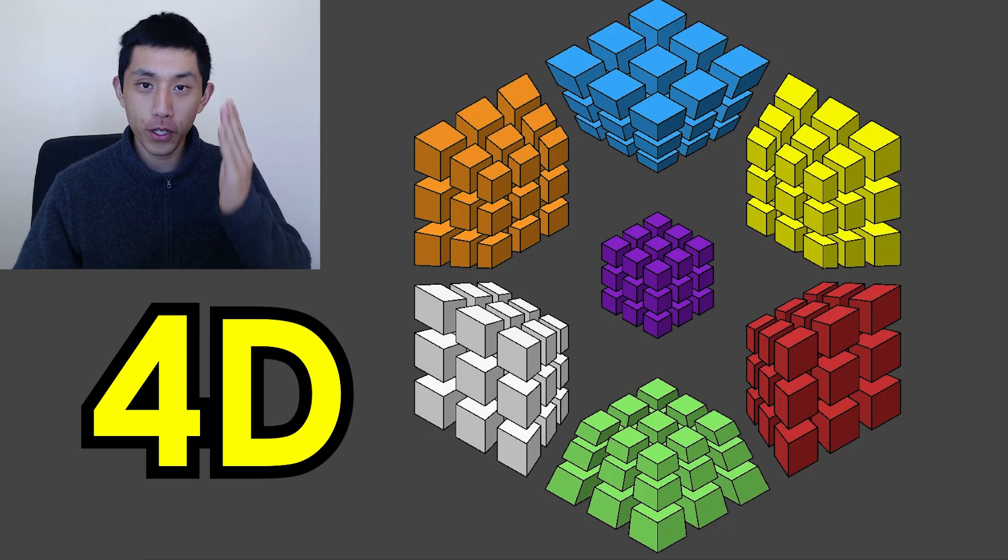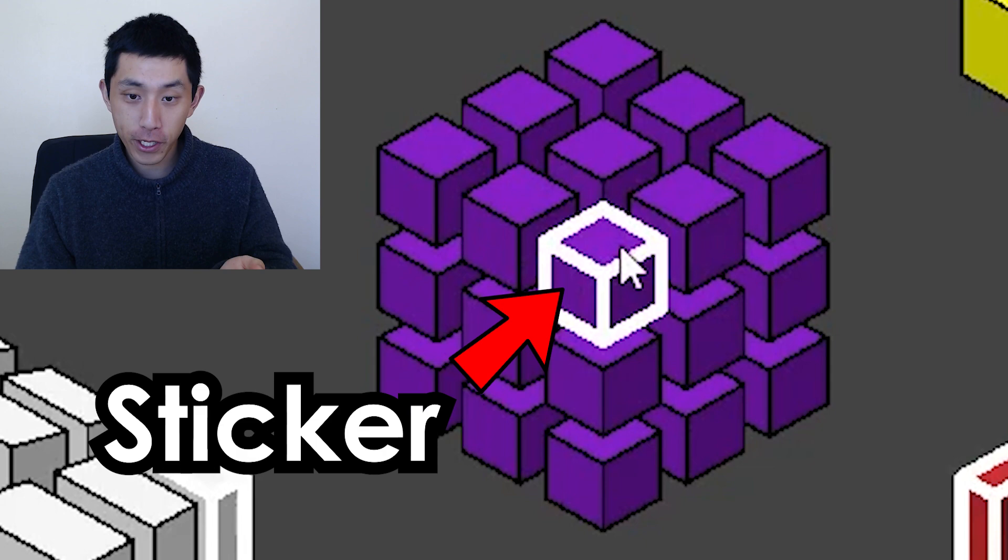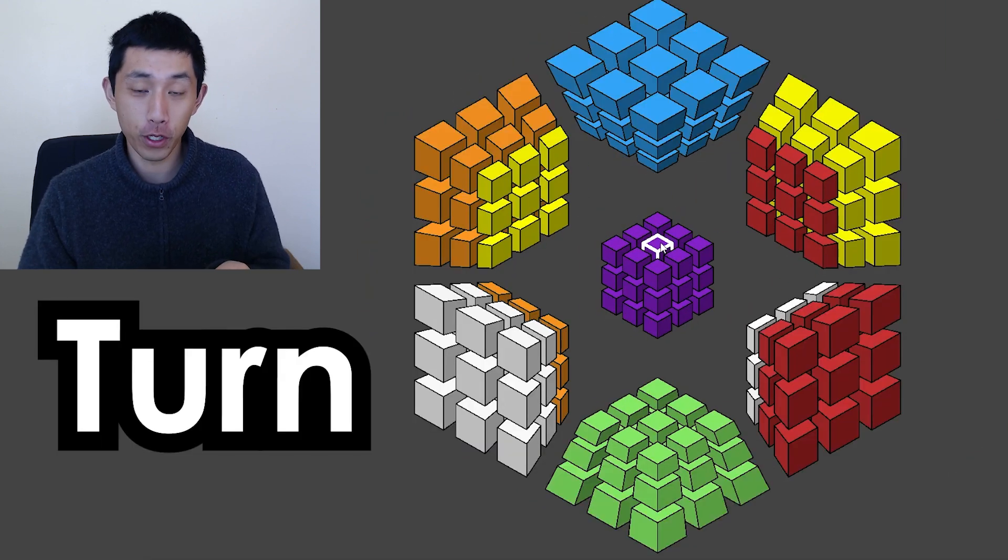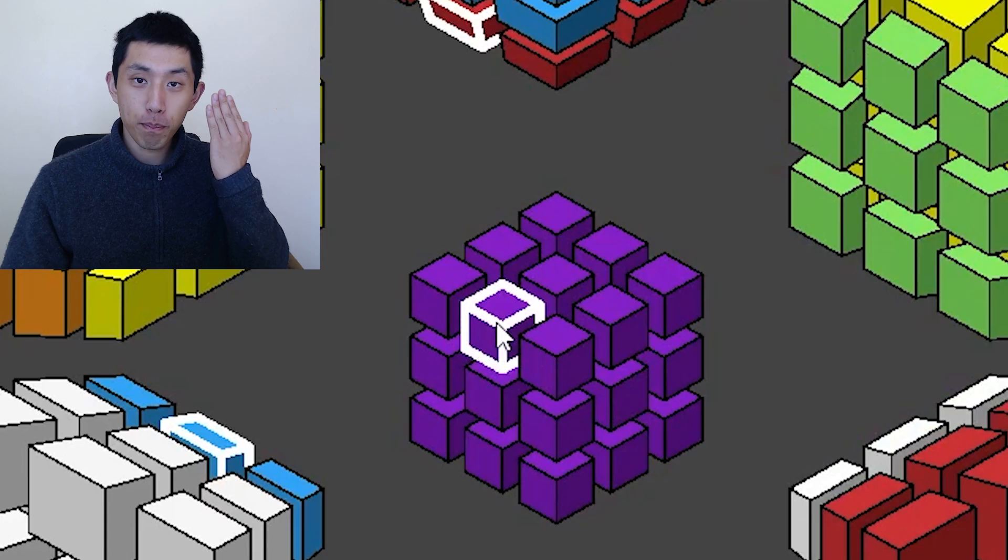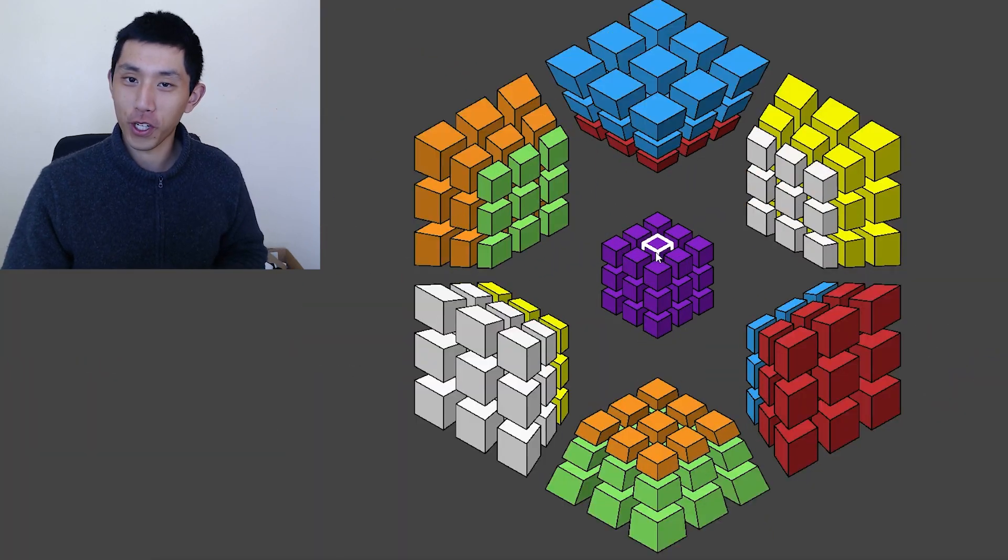This is the Rubik's Cube, but this is the 4D Rubik's Cube because every sticker, side, and turn quite literally has an extra dimension to it. So how is this even possible and how does it work?